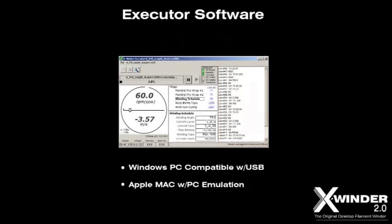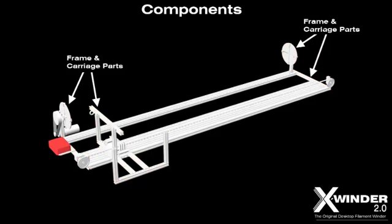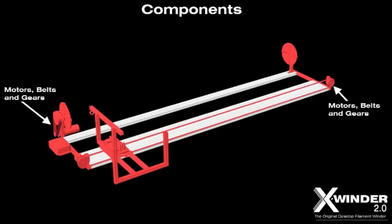Both programs run on a Windows PC or a Mac with PC emulation software. The X-Winder 2 can be purchased in whole or in parts. You can buy the control box with electronics and software as a stand-alone product. The frame and carriage parts can be added as a second stand-alone product, or you can buy the X-Winder 2 with the required stepper motors, belts, and gears included.